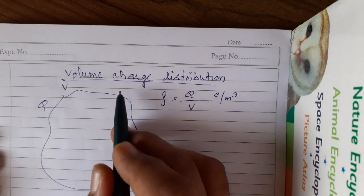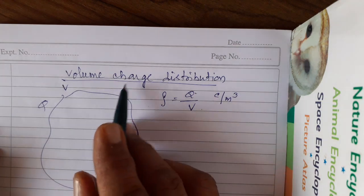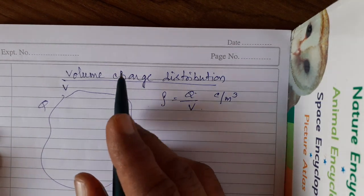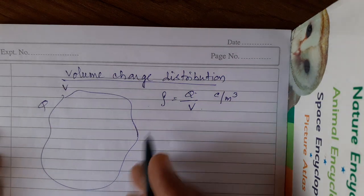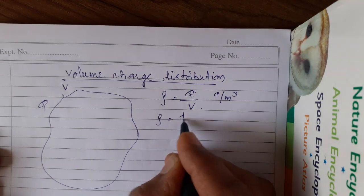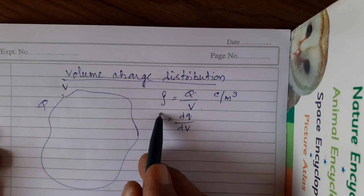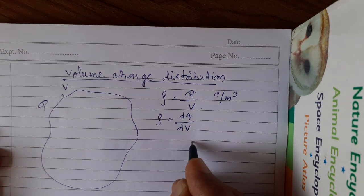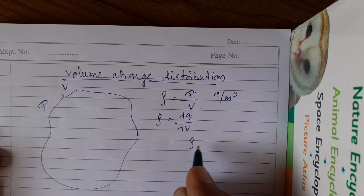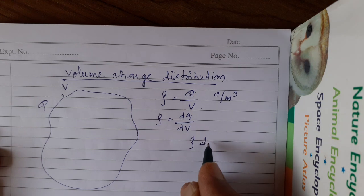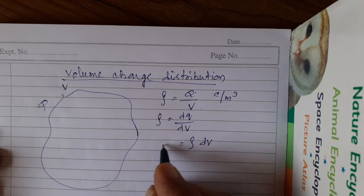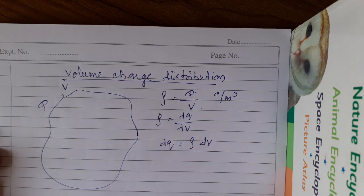We have got only one case of this, which also we come across in competitive, not in theory. So rho can be defined as dQ by dV. What is rho here? Charge per unit volume. Per unit volume, the charge is rho. If I consider a small element of volume dV, then the charge will be rho dV.